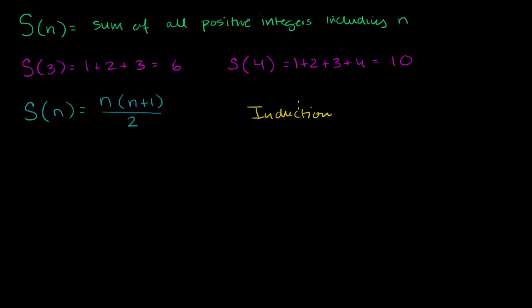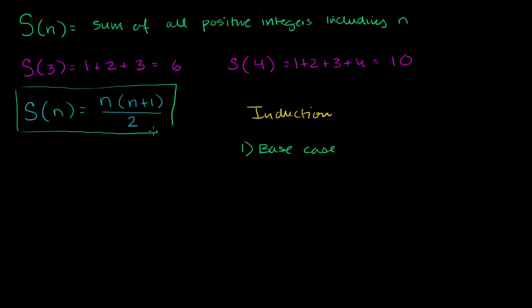It's kind of an interesting philosophical way to prove something. The way you do a proof by induction is: first, you prove the base case. In the case of this statement right over here — this is what we need to prove — we're first going to prove it for 1. That's going to be our base case. And then we're going to do the induction step, which is essentially saying: if we assume it works for some positive integer k, then we can prove that it's going to work for the next positive integer, k plus 1.